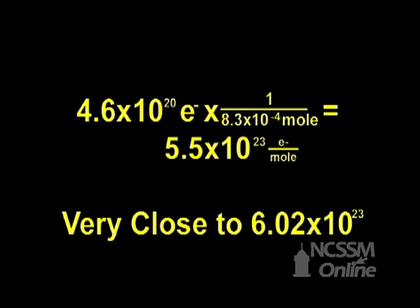You can see that our experimental value is very near the 6.02 times 10 to the 23rd as stated in our text. So you can see that this is one method of using an experiment to determine the actual value for Avogadro's number.